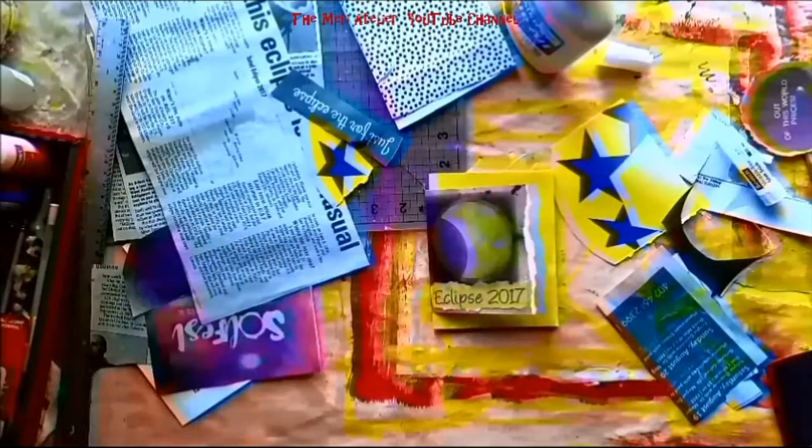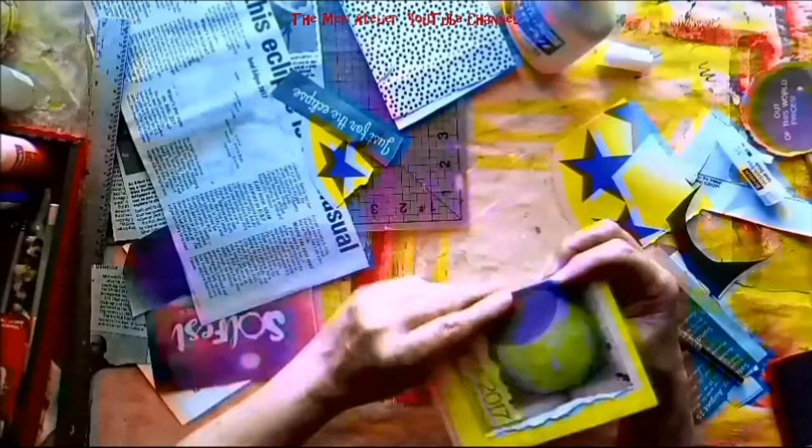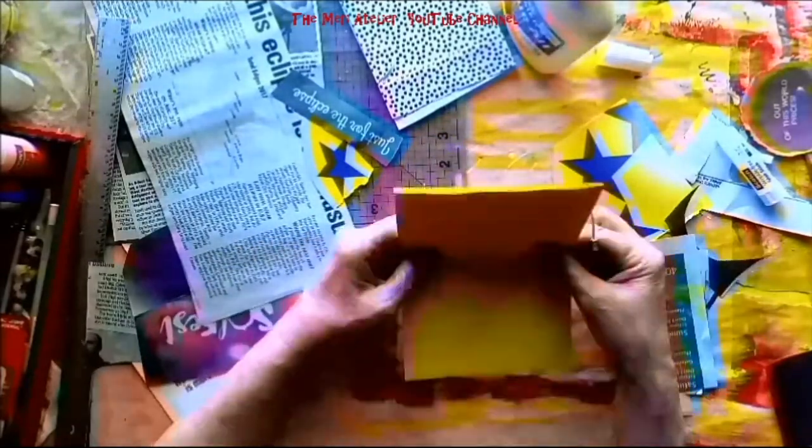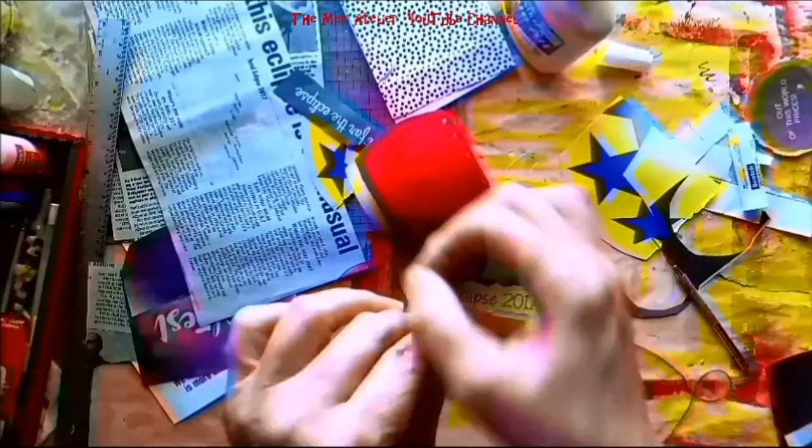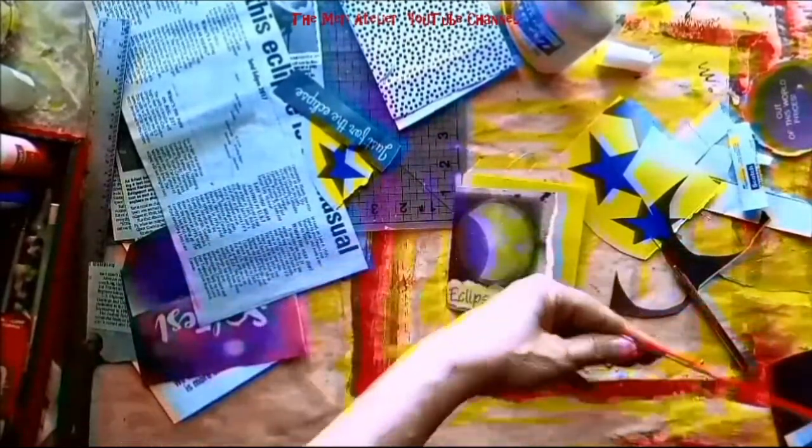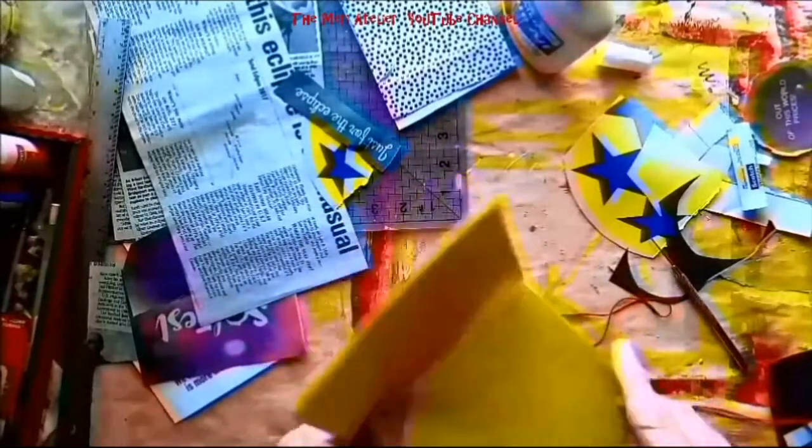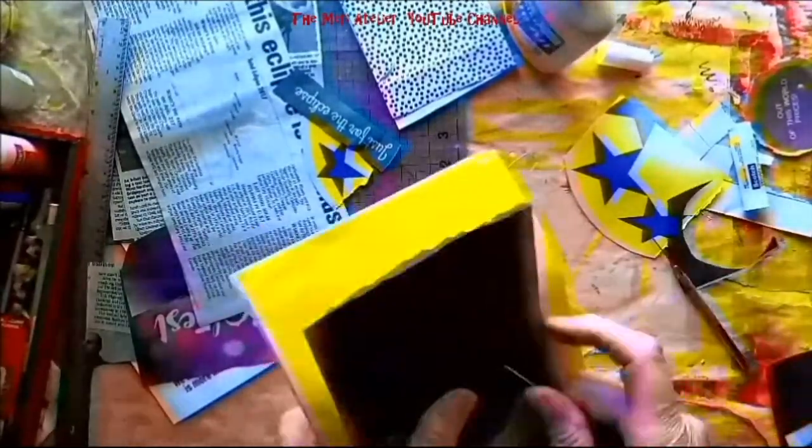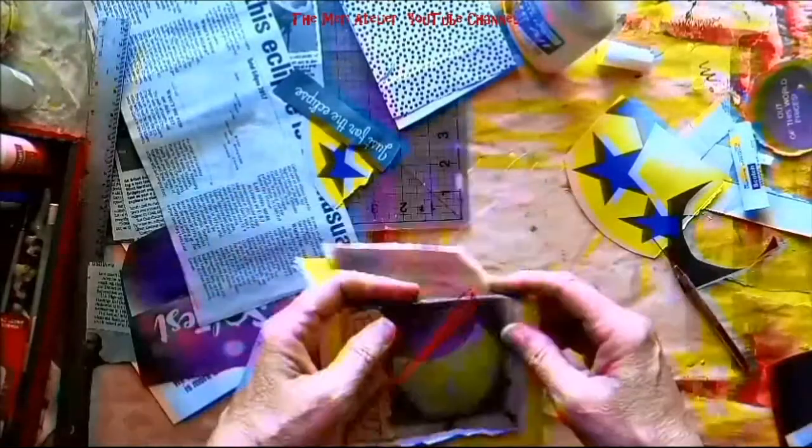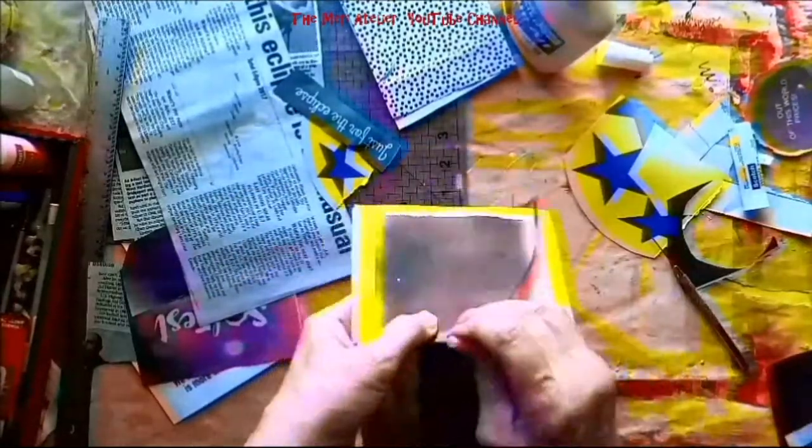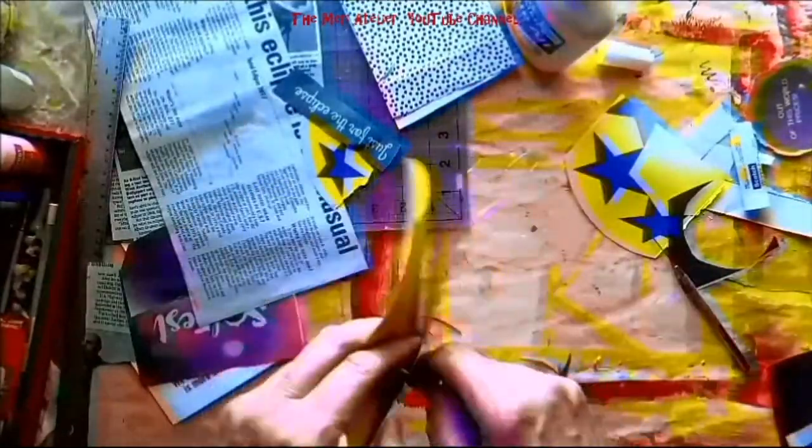And attach it and eclipse 2017 journaling spot. The smaller page there is a Tim Holtz stencil backing. Here I am using some red crochet thread to bind the mini zine. I'm just doing a basic pamphlet stitch. Very fun to do. Very simple to do.